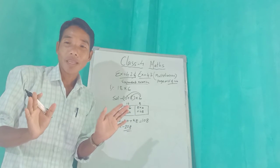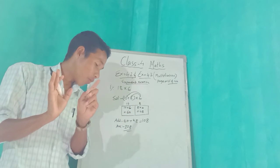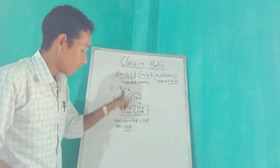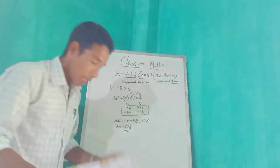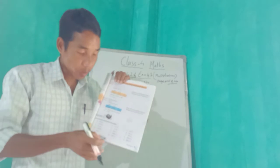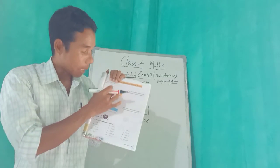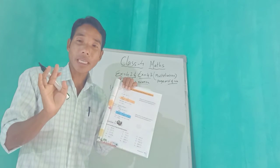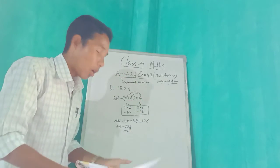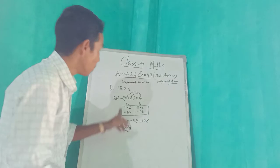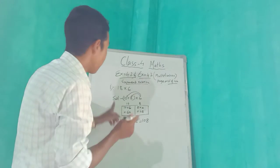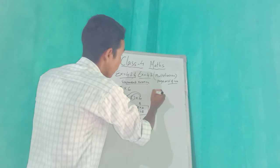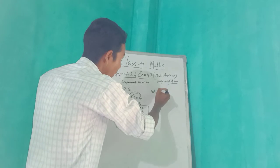Have you understood? I will show you one more. If you have not understood, try to see this example again — how it is done — and then you will be able to understand. I hope you have understood. Now I am going to do number B, number 2: 5 into 73.